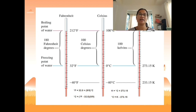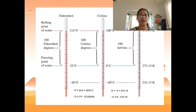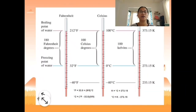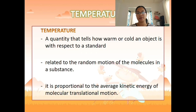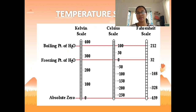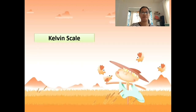We have different scales: Celsius, Fahrenheit, and Kelvin. The boiling point is 100°C, equivalent to 212°F and 373.15 K. The freezing point is 0°C, equivalent to 32°F and 273.15 K.